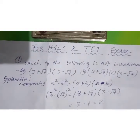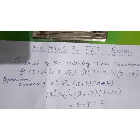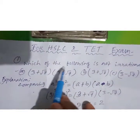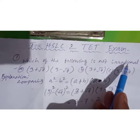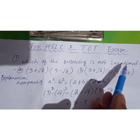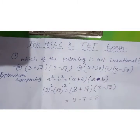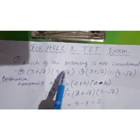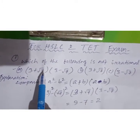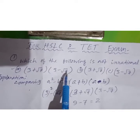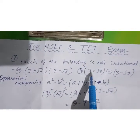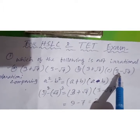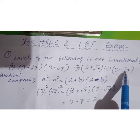An important question for SSLC examination and TET — Teacher Eligibility Test. The first question is: which of the following is not irrational? We should know about irrational and rational numbers, including terminating and non-terminating numbers. The options given are: (a) three plus root seven into three minus root seven, (b) three plus root seven, and (c) three minus root seven.